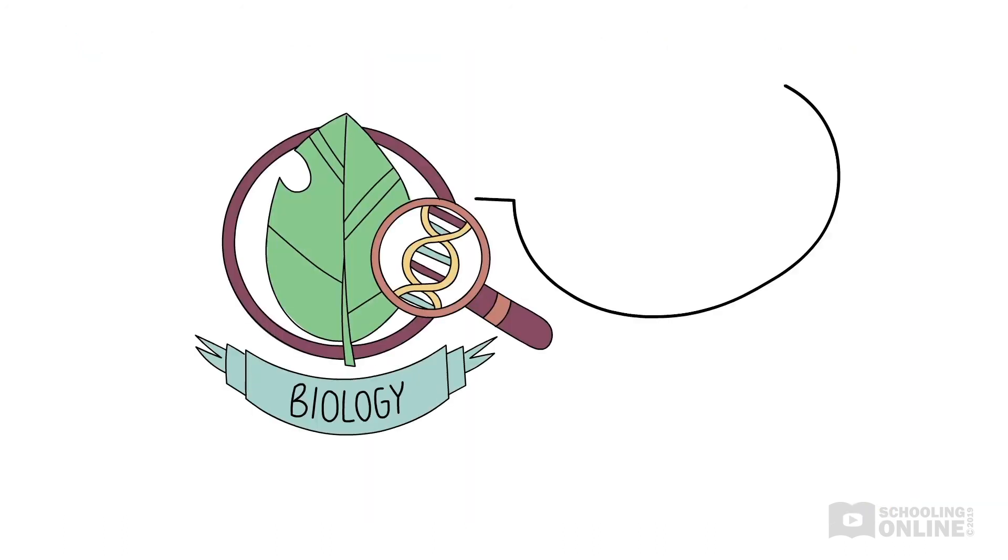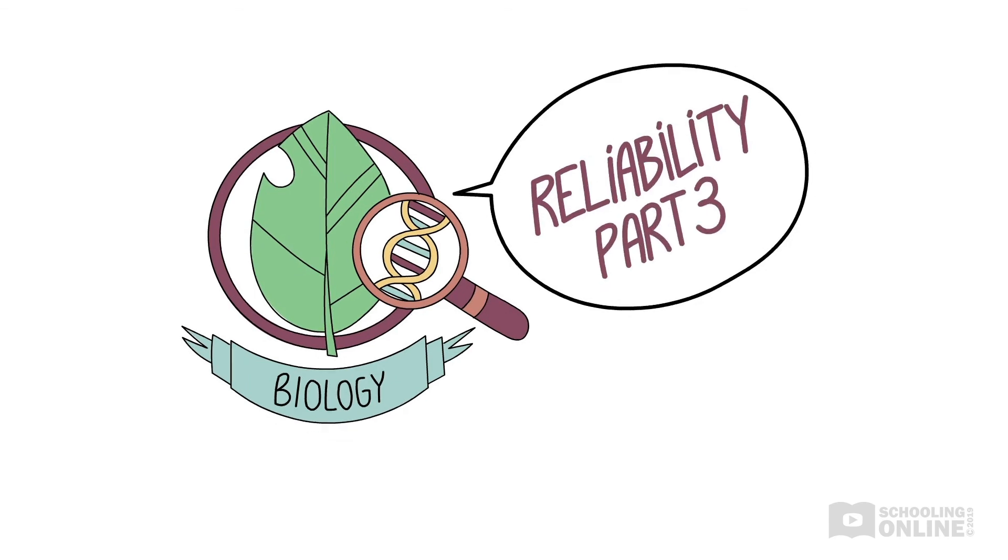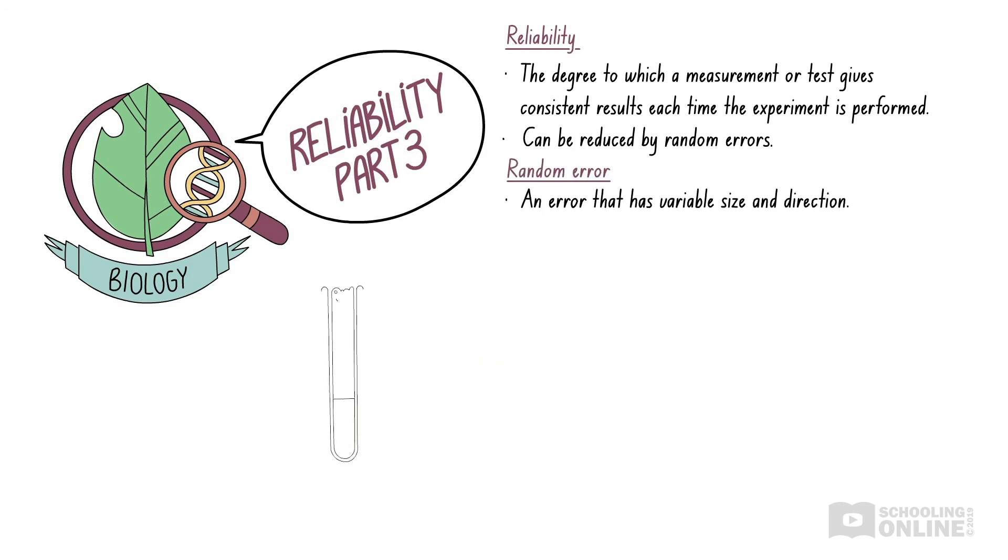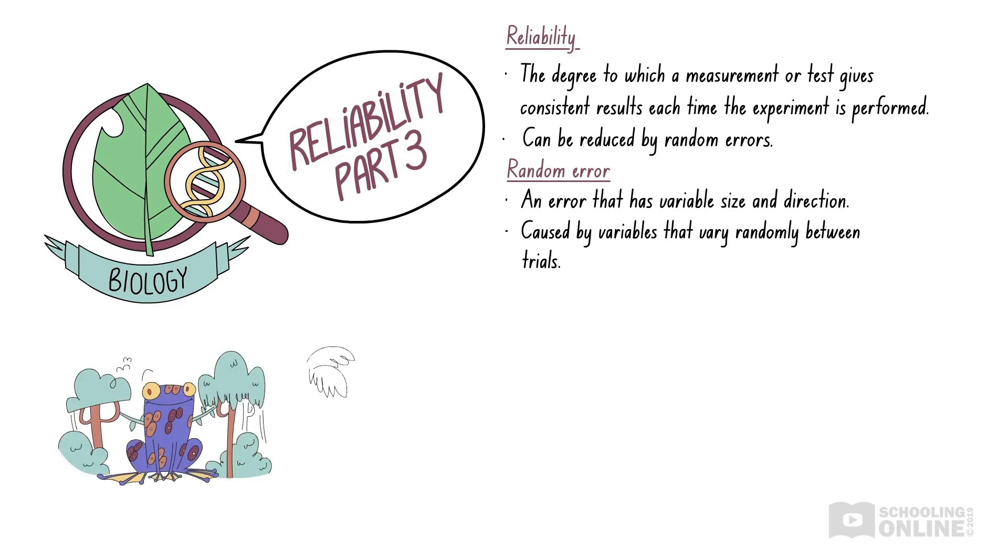Let's revise what we've discussed in this video. Reliability is the degree to which a measurement or test gives consistent results each time the experiment is performed. The reliability of an experimental procedure can be reduced by random errors. A random error is an error that has variable size and direction. Random errors are caused by variables that vary randomly between trials, including environmental conditions, experimental factors and intrinsic variability.